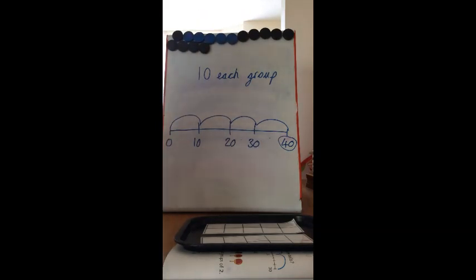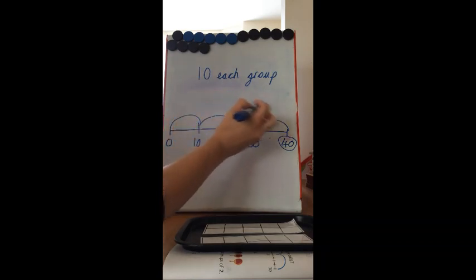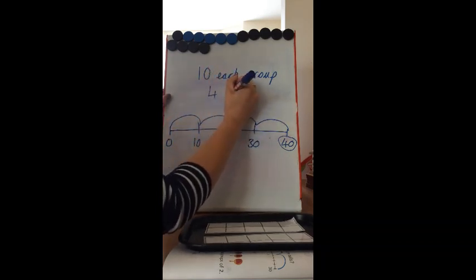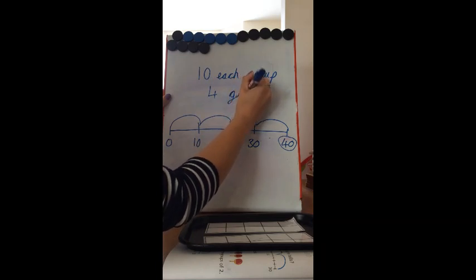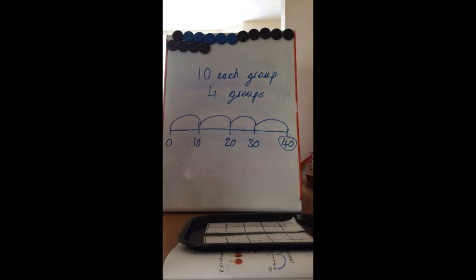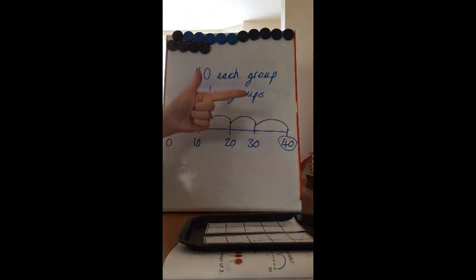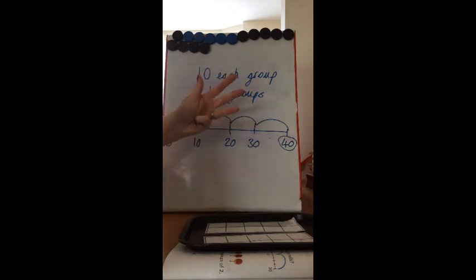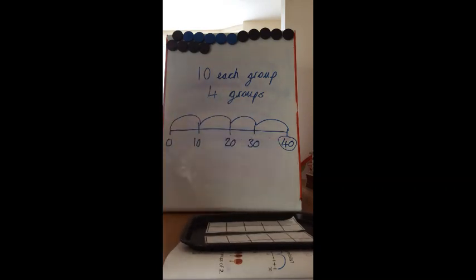Now it wants to know how many groups there are. We count our jumps: 1, 2, 3, 4 — there are 4 groups. Let's do our 10 times table: 10, 20, 30, 40 — one, two, three, four. Four groups of 10 make 40. Well done if you got this challenge today!